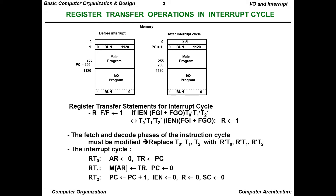After the interrupt cycle, at location 0 it stores 256. PC equals 1, at location 0: BUN 1120. PC has reached the transmission point of the interrupt cycle. The R flip-flop is set to 1 whenever FGI plus FGO is active.